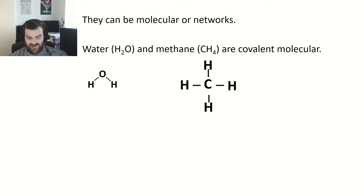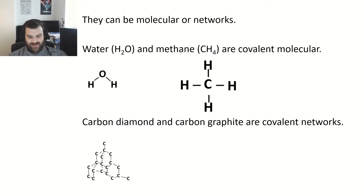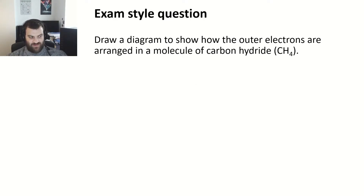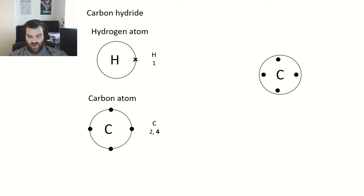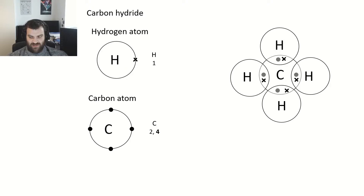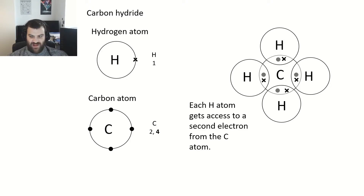Covalent compounds can be either molecular or network. Water and methane are examples of covalent molecular substances — small groups of atoms joined together. Carbon diamond and carbon graphite are covalent networks — much larger structures with lots of atoms joined together. In exam questions you can be asked to draw a diagram showing outer electrons: for carbon hydride, hydrogen has one outer electron and carbon has four. The hydrogens attach by overlapping to form covalent bonds, giving hydrogen two electrons and carbon eight — both stable arrangements.